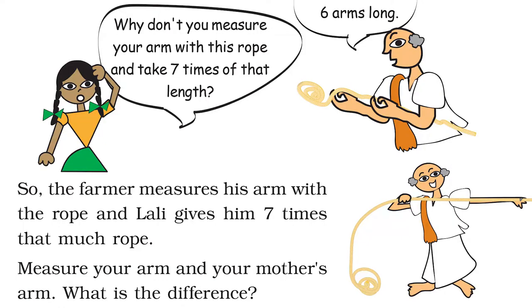What do you think, why did this happen? Let me give you a clue. Is your father's and mother's arm length the same as yours? No. That's why the measurement gets wrong here. So the farmer measures his arm with the rope and Lali gives him seven times that much rope. You can try it yourself by measuring your arm and your mother's and father's arm length and compare it yourself.